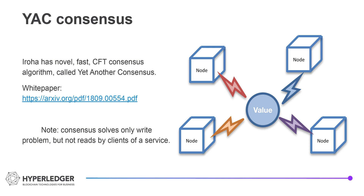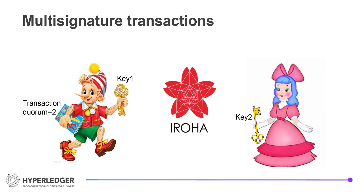Iroha employs a novel consensus algorithm called Yet Another Consensus, which is an efficient, crash-fault-tolerant algorithm. Iroha also supports multi-signature transactions. Each transaction has a field named Quorum that specifies how many signatures the transaction needs to collect in order to get committed.